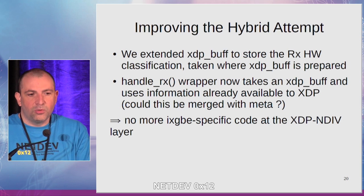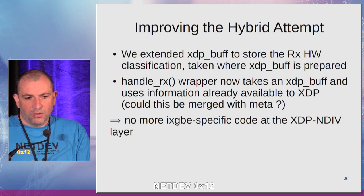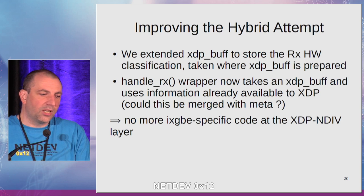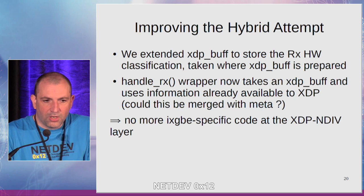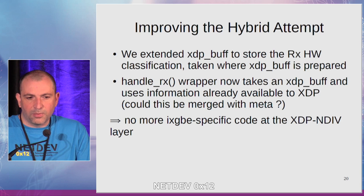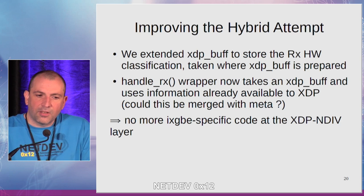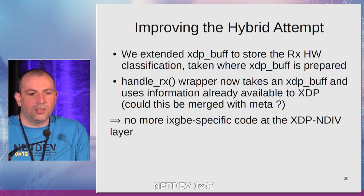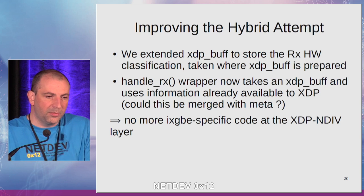So in a second step, we decided to improve the hybrid attempt. We moved the extraction of the classification information found in the Rx descriptor — we moved this code directly to where the XDP buffer structure is prepared. With this, the NDEV wrapper directly takes as argument an XDP buffer, exactly like bpf_prog_run_xdp does.